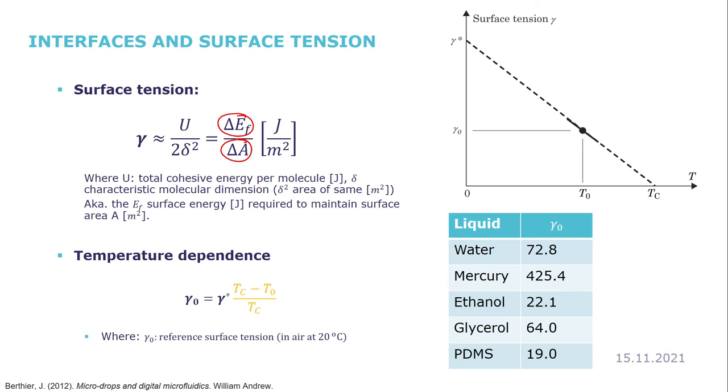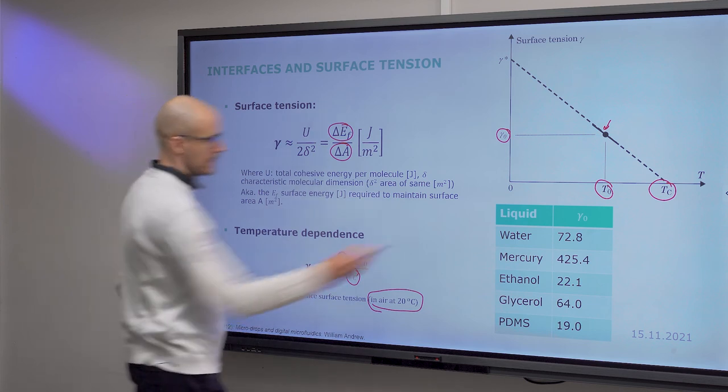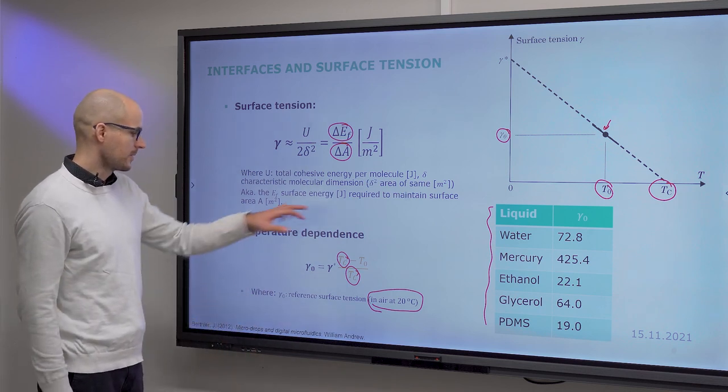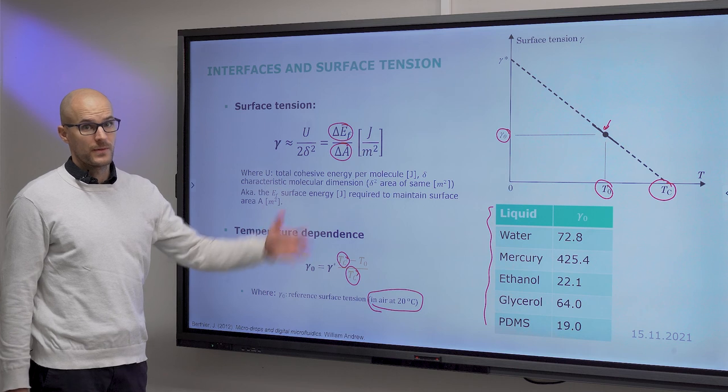Surface tension is also temperature dependent. There is a critical temperature at which the surface tension drops to zero. But it is also defined in relation to surface tension at room temperature in air at 20 degrees Celsius. So this is your surface tension at room temperature. That's what you will find in libraries as a value. And here you have a table of some common materials and their surface tension at room temperature, also known as reference surface tension.